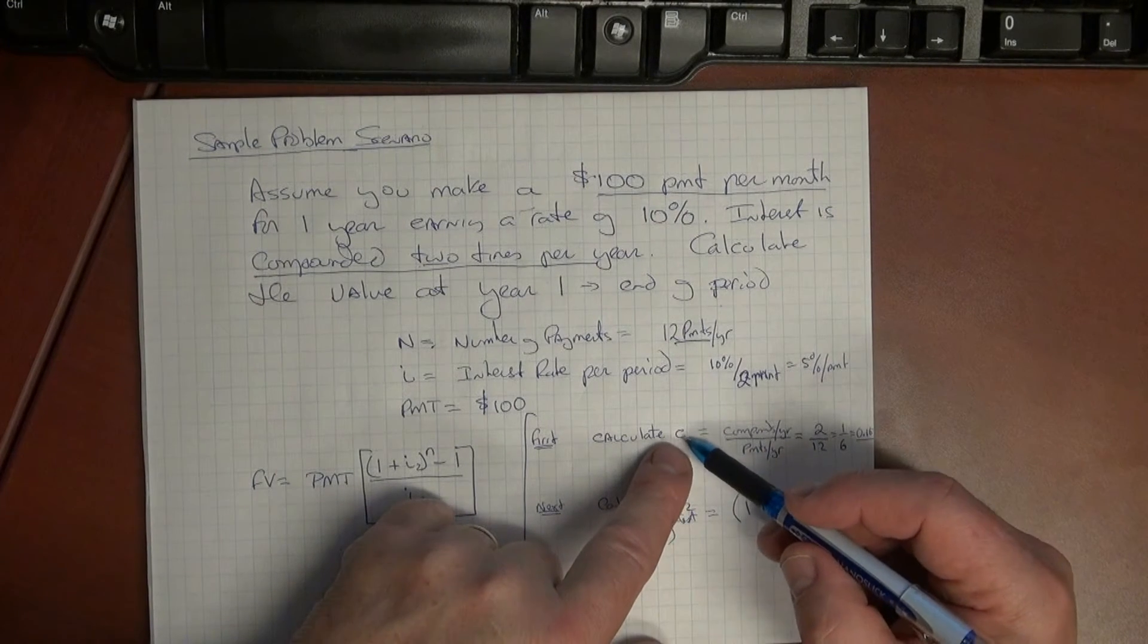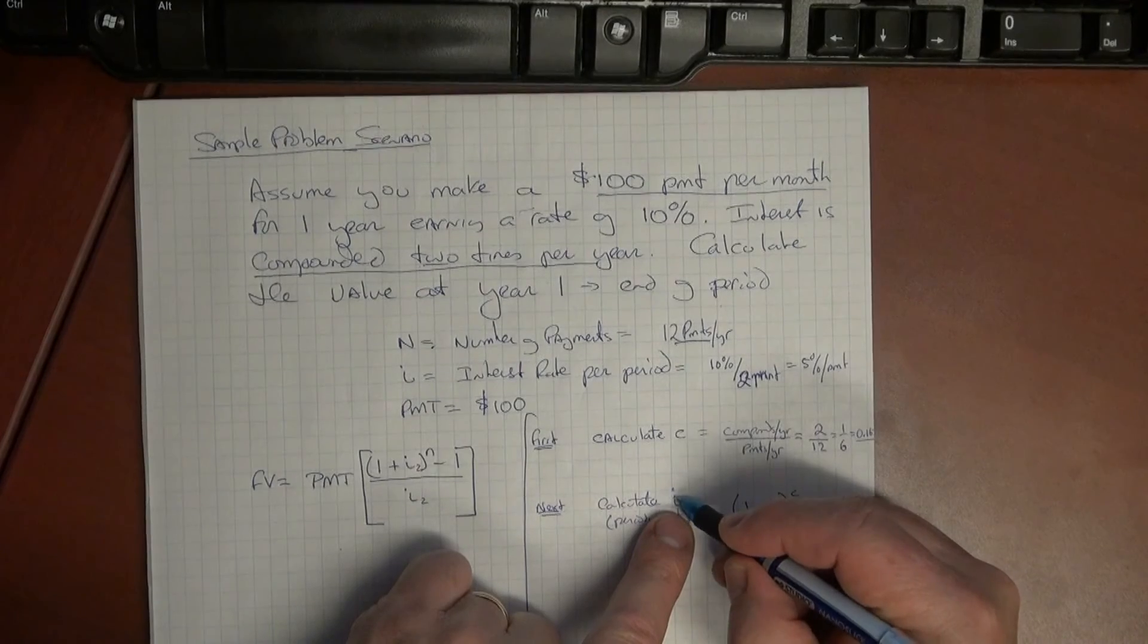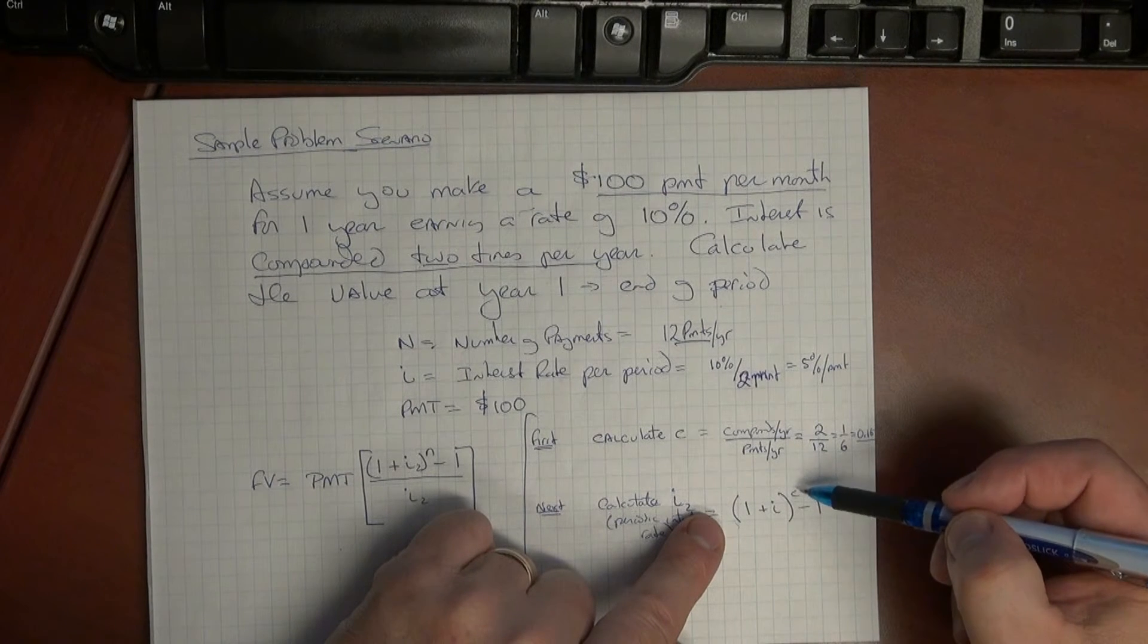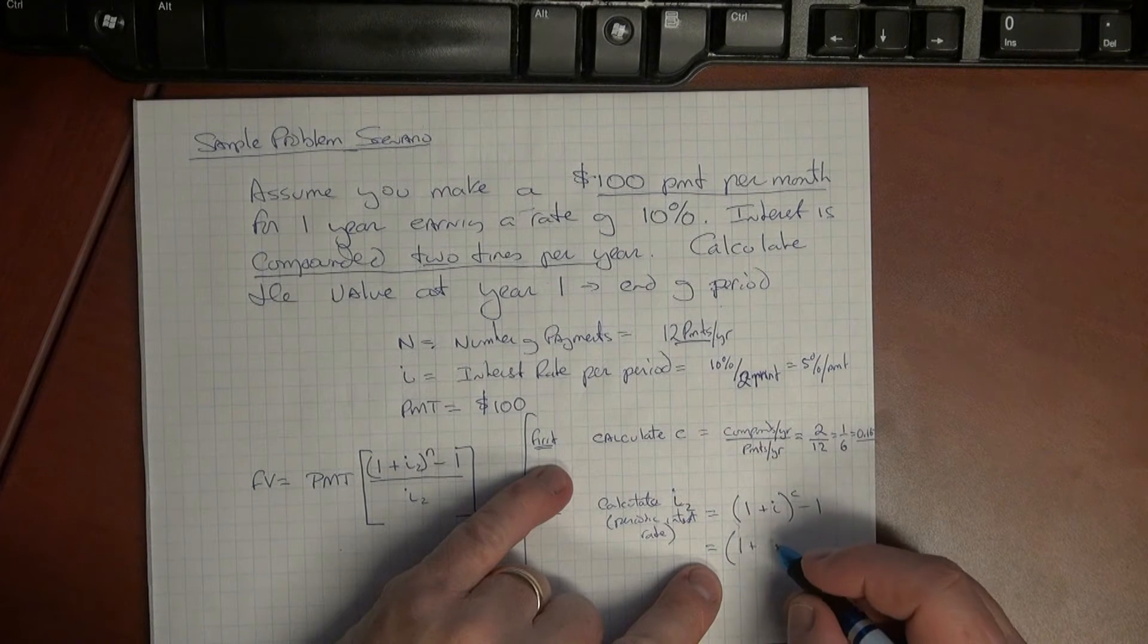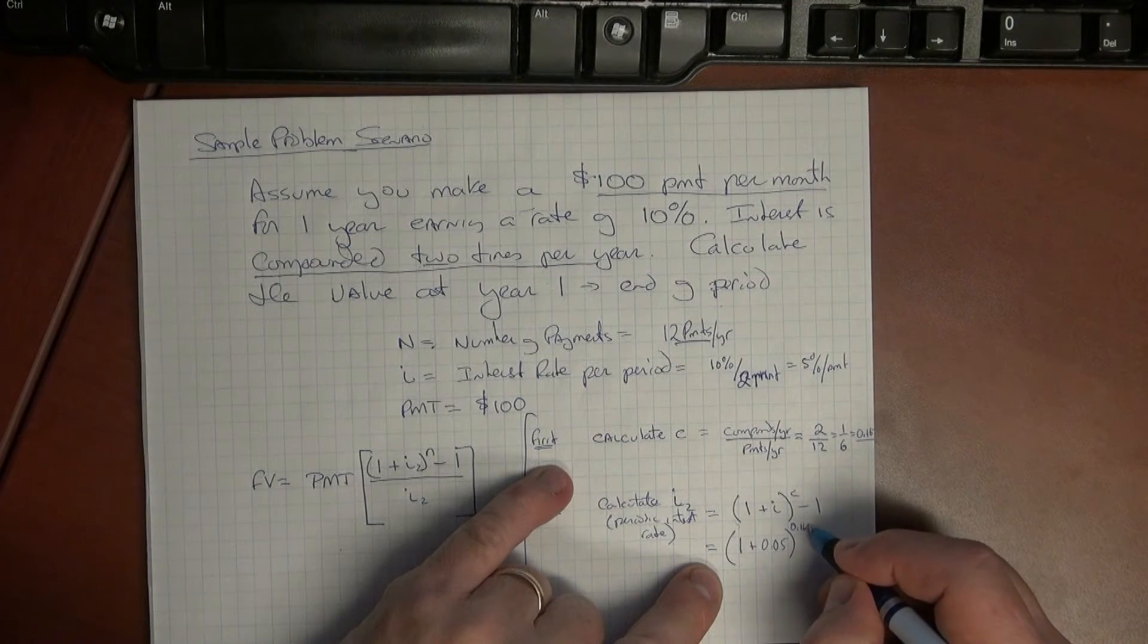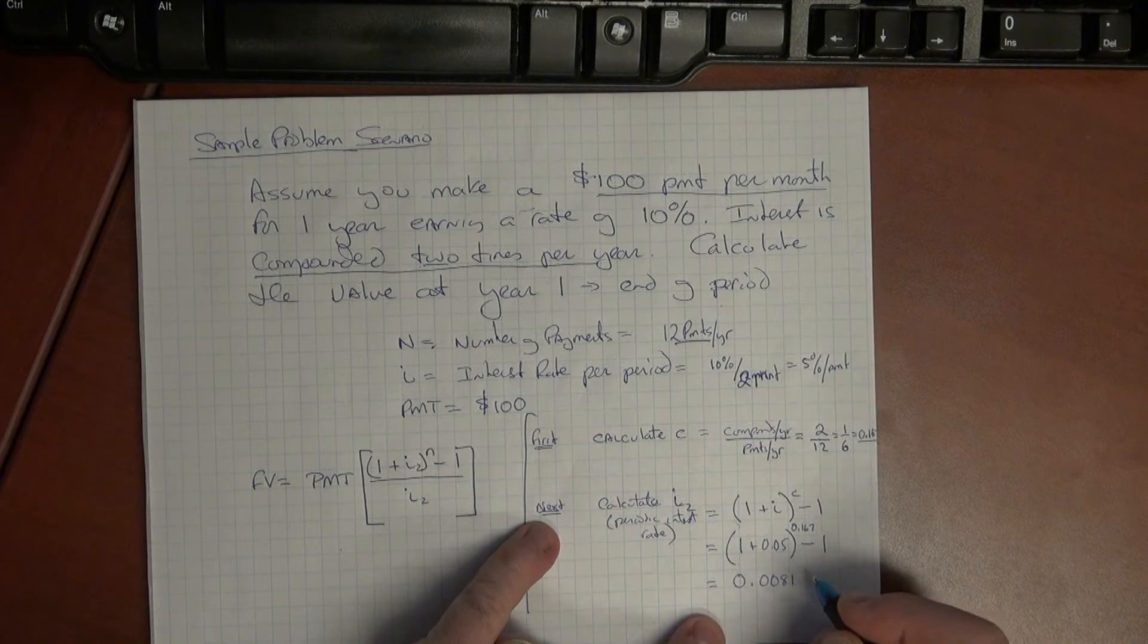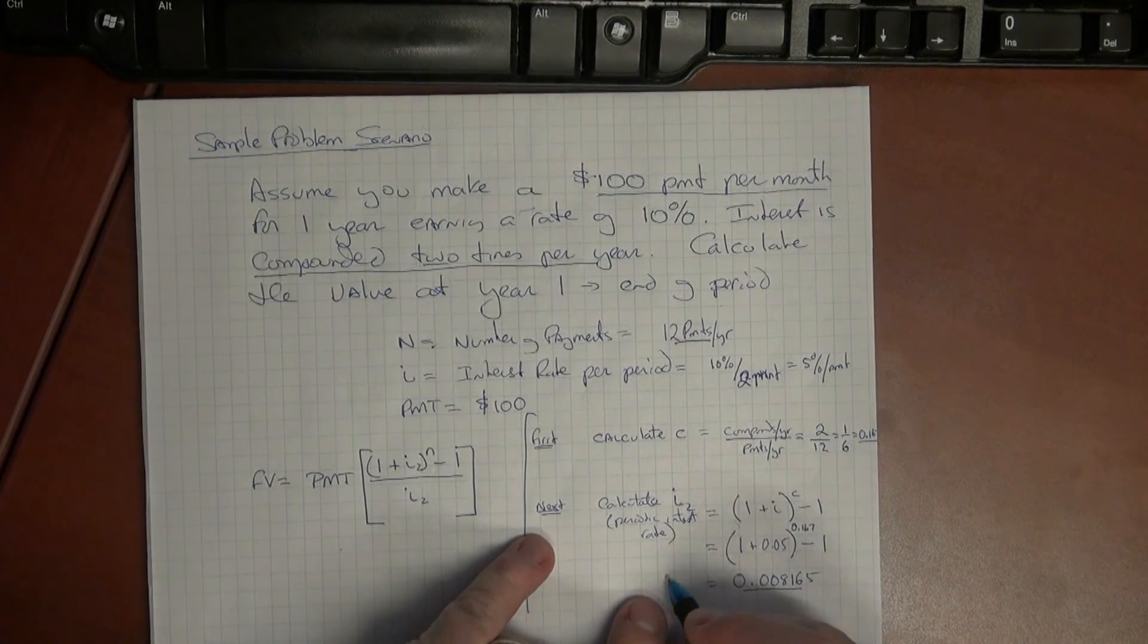Then what we need to do is we take that c and we plug it in to get this periodic interest rate which is an i2. In order to do that we use a simple formula: (1 + i) to the c power minus one. So in our particular instance here, (1 + 0.05) to the power of 0.167 minus one. And that i2 then will come out to 0.008165. So that will give us what's called the i2.